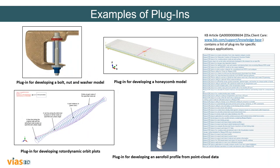Here are some examples of plugins available on the 3DS website — 3ds.com — under the support knowledge base. On the top left, we have a plugin for developing a honeycomb model. We have a plugin for the bolt-nut-washer model, a plugin for developing a rotor dynamics orbit plot, and a plugin for developing an airfoil profile from point cloud data. There are many more examples. You can go to the 3DS website, create an ID and password, and search for those plugins and download them for free.